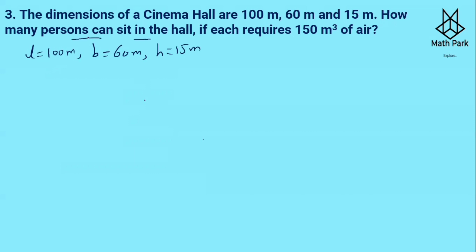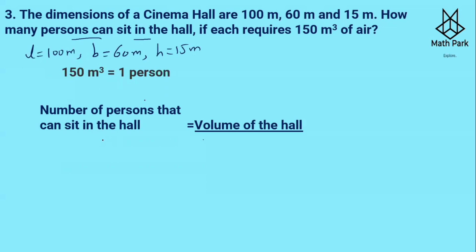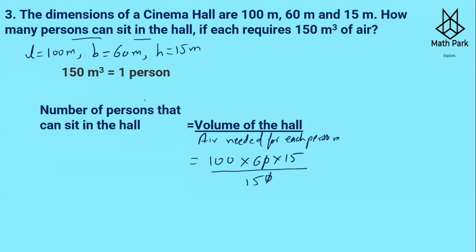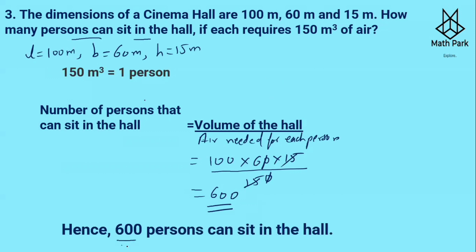How many persons can sit in a hall if each requires 150 m³ of air? The number of persons = volume of hall ÷ air needed per person. Volume of hall = length × breadth × height = 100 × 60 × 15. Air needed per person = 150 m³. Simplifying: 15 and 150 cancel, and 6 × 100 = 600. So 600 people can sit in the hall.